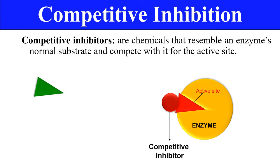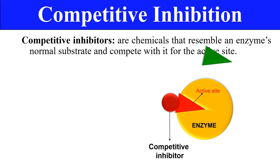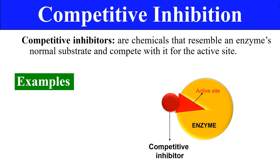Once the active site is occupied by the competitive inhibitor, when the substrate (the green one) comes, it will not bind to the enzyme because the active site is not available. As a result, when the substrate is not able to bind to the enzyme, there will be no product formed — so the enzyme is inhibited by this competitive inhibitor.